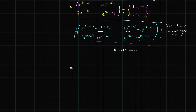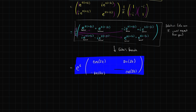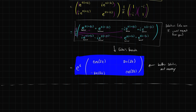Every term has e^t in it — the real power e^(t·1) — so we pull that out and pass the one-half to the inside. Using Euler's formula, the sines and cosines appear with frequency 2t. We end up with e^t times [[cos(2t), sin(2t)],[-sin(2t), cos(2t)]]. This is a better simplified solution, though I won't be a stickler for requiring you to arrive at it. Anyway, we'll stop there for the day — it's been a lot of fun. See you in the next one.